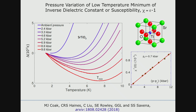Curiously, although the peak in the susceptibility in the ferromagnetic case has been known for many years, a consistent and agreed-upon quantitative interpretation has not been found, although there are many interesting proposals. But in this case — the minimum in the inverse susceptibility — I think we can actually say where this phenomenon arises.